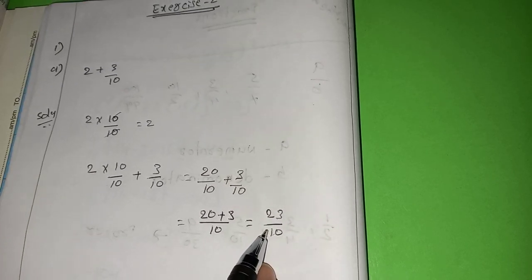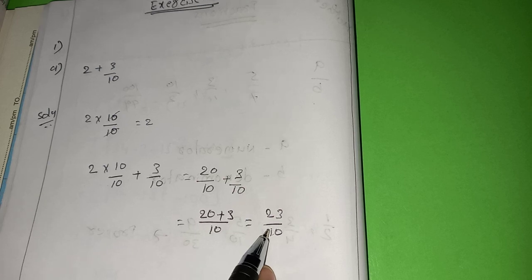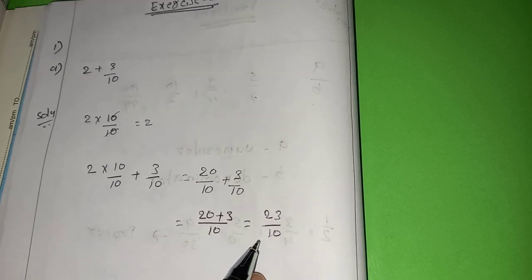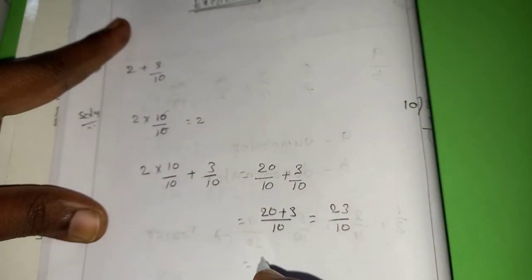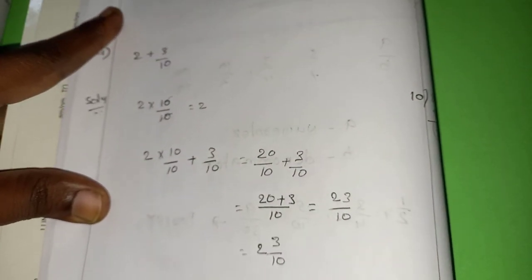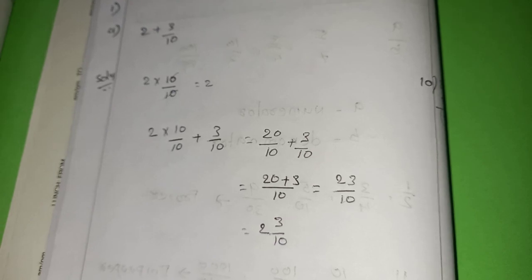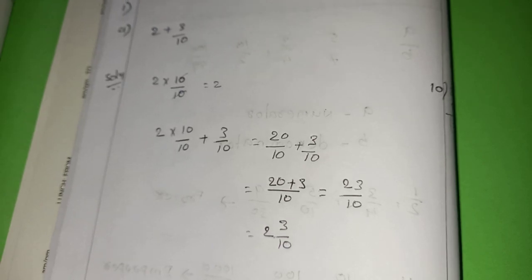23 by 10 is an improper fraction, so let us convert 23 by 10 into a mixed fraction. 10 goes into 23 twice with remainder 3. So we can rewrite 23 by 10 as 2 and 3 by 10.